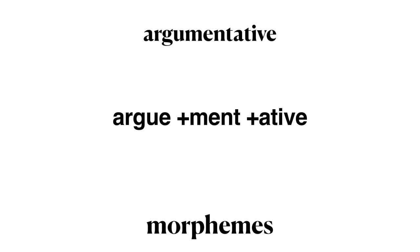Here's an example. The word 'argumentative' is an English word made up of three morphemes. The first morpheme is 'argue.' The second morpheme is a suffix that attaches to 'argue' — the suffix '-ment.' When 'argue' and '-ment' are combined, they form 'argument.' The third morpheme is '-ative,' which combines with the first two morphemes to result in 'argumentative.'